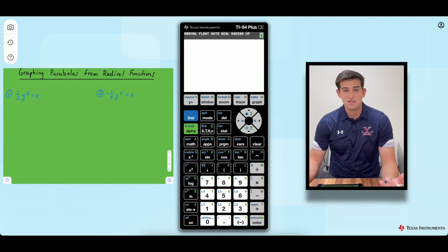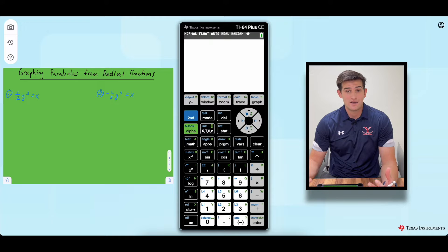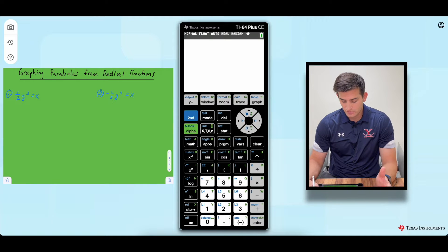Hello everyone, in this video we're going to talk about how we can use the TI-84 Plus CE graphing calculator to graph parabolas from radical functions. We're going to start off and do two examples here and we'll graph both of these in the calculator.